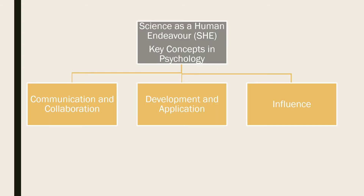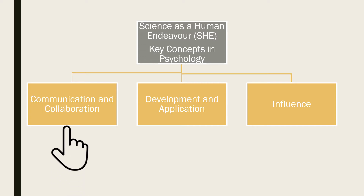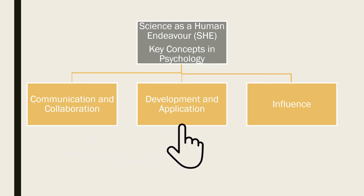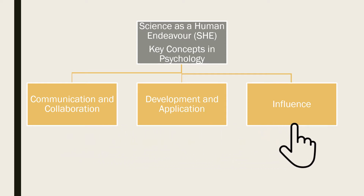In psychology, science as a human endeavour is divided into three key concepts. These are communication and collaboration, development and application, and influence. It is important to note that while these key concepts underpin the contexts, approaches and activities used within SACE psychology, they are neither comprehensive nor exclusive. Each key concept has a number of elaborations. Let's explore each of these key concepts and its elaborations in more detail.